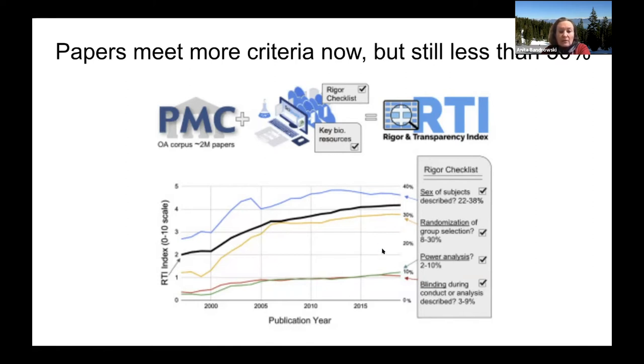You can see that in about 1998, the average paper had addressed two out of ten of these criteria. By 2019, the average paper addresses just over four out of ten criteria. That's great — as a field, we're doing much better. But we could do a little better still.